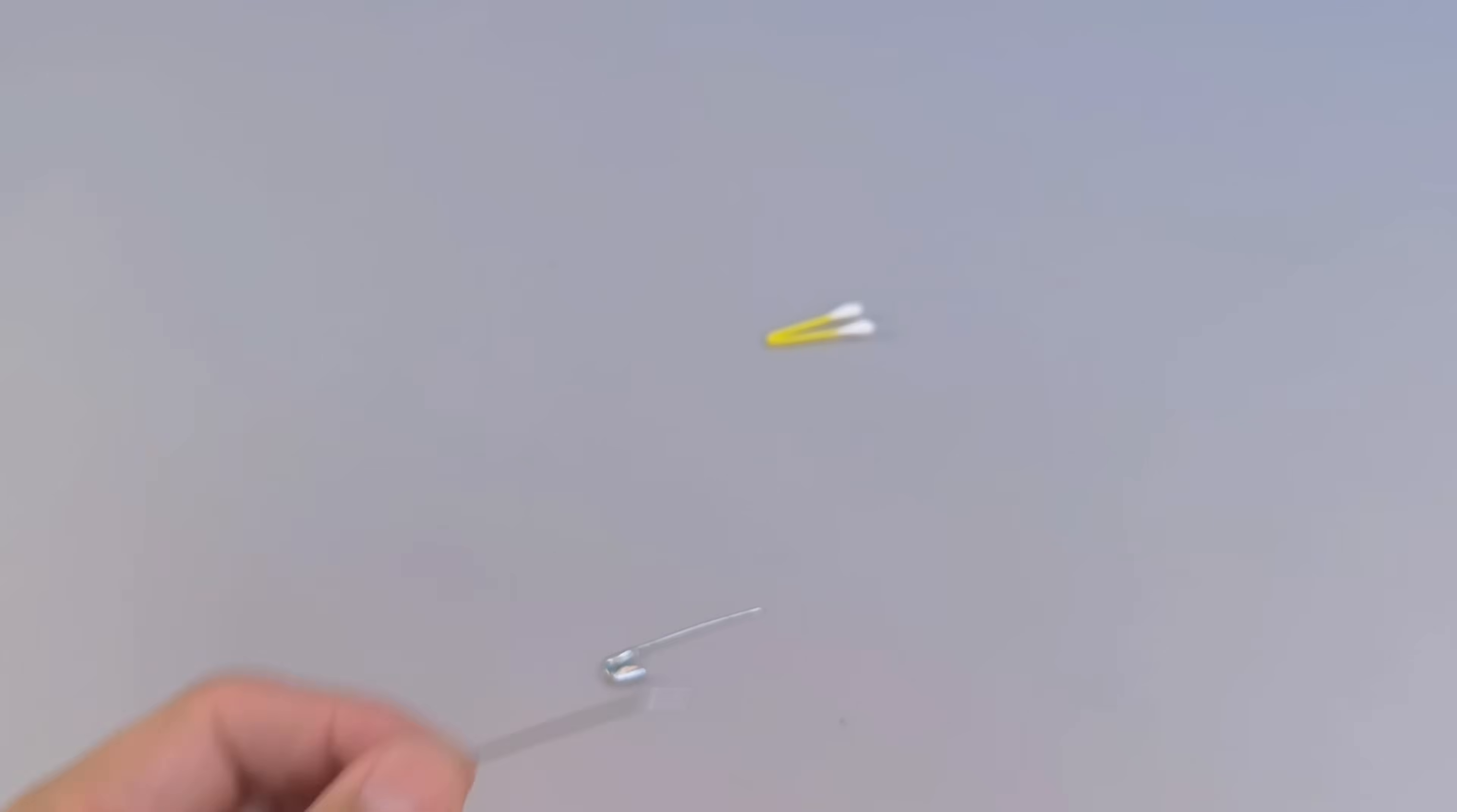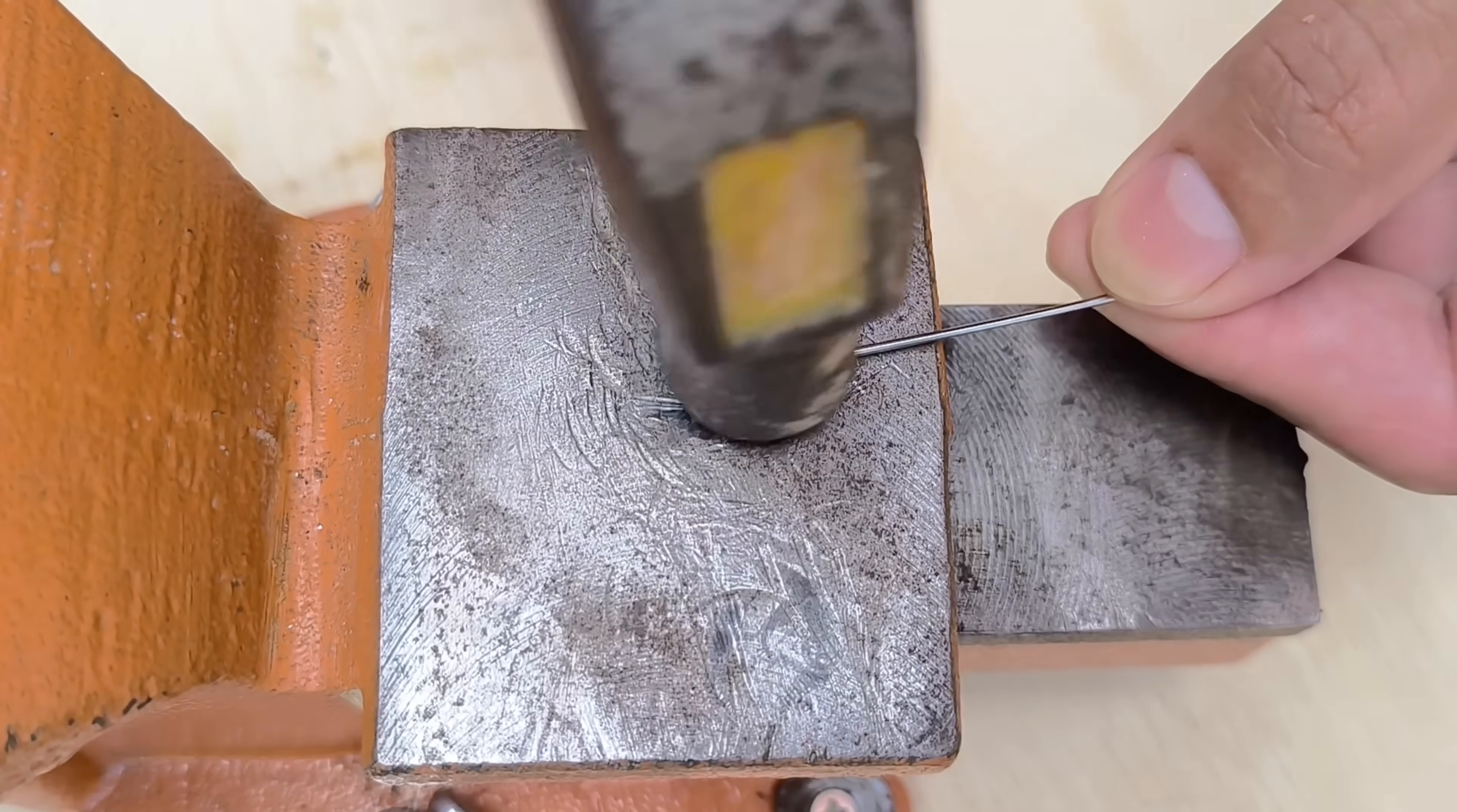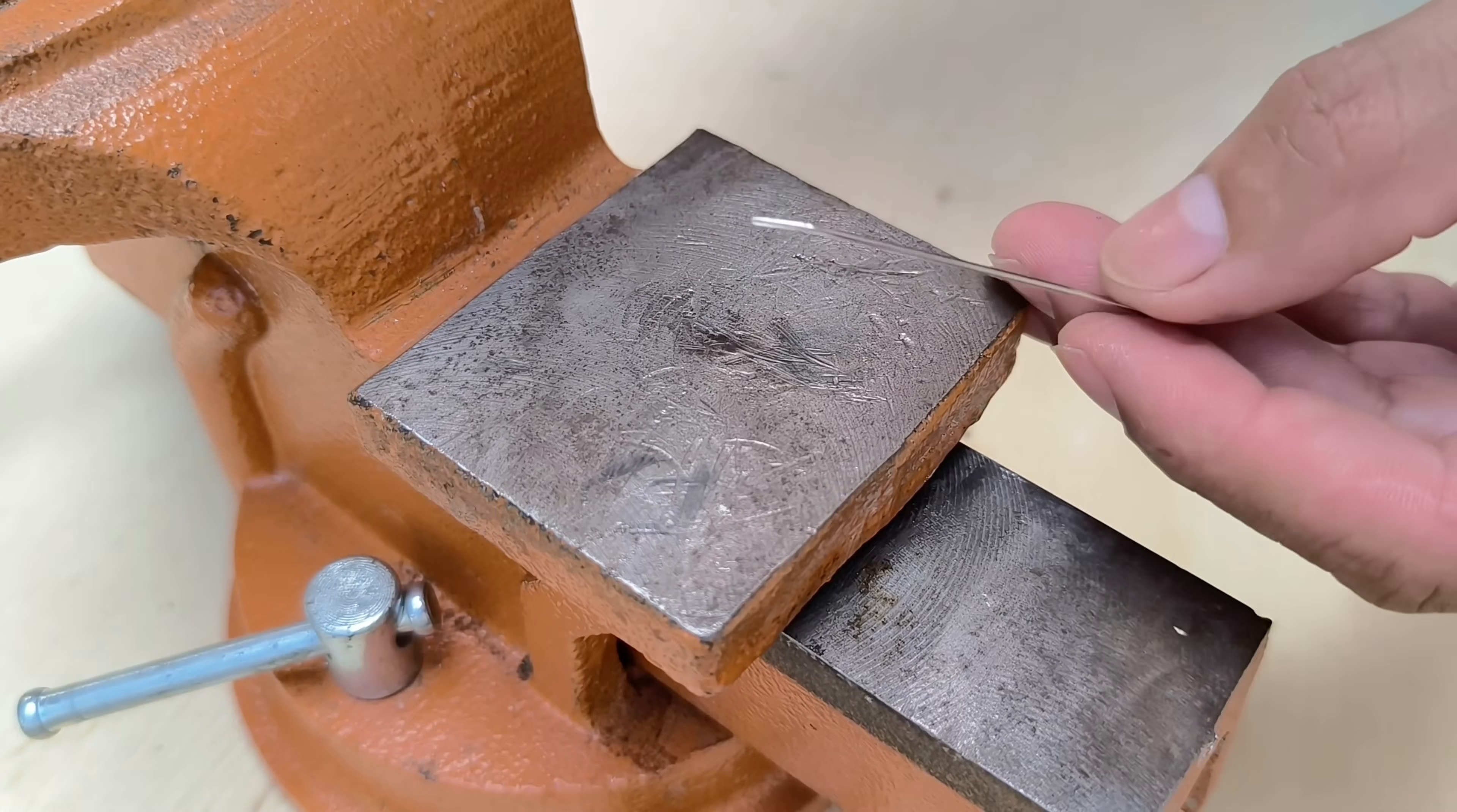Use the pliers to shape it and then to make sure it is perfectly aligned and without imperfections, tap lightly with a hammer on an iron surface. This will make the metal straight, firm, and ready for the next step.